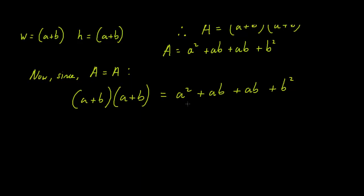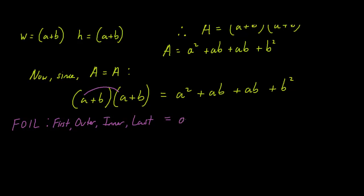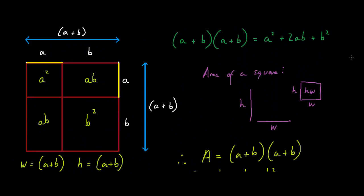You may not have noticed this, but this value relates to the FOIL method. FOIL stands for First, Outer, Inner, and Last. So if we use the FOIL method to multiply (a + b) by (a + b): if we do First, we get a squared; if we do Outer, plus ab; if we do Inner, plus ab; and if we do Last, b squared. As you can see, it relates to this value up here. So we know that the FOIL method works because of this method of multiplying using squares.